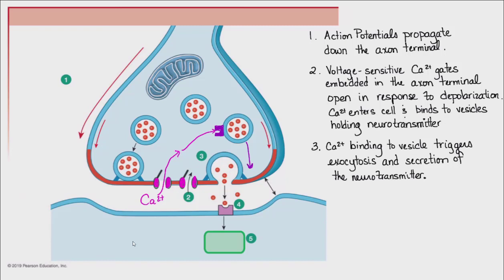That neurotransmitter, when secreted, diffuses throughout the synaptic cleft. In order to have maximal efficacy and minimum diffusion time, we really need to minimize our distance. This is an example of the structure-function relationship: the synaptic cleft is very, very narrow so that the neurotransmitter doesn't have far to diffuse and can bind to the receptor on the postsynaptic cell very quickly.